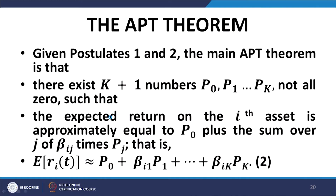What is the APT theorem? Given postulates one and two, the APT theorem states that there exist k+1 numbers p0, p1, p2, ... pk, not all zero, such that the expected return on the ith asset is approximately equal to p0 plus the sum over j of beta_ij times p_j (equation number 2). The expected return on security i is represented as p0 plus the sum of the product of the risk exposure profile betas each multiplied by the corresponding price of risk p_j.